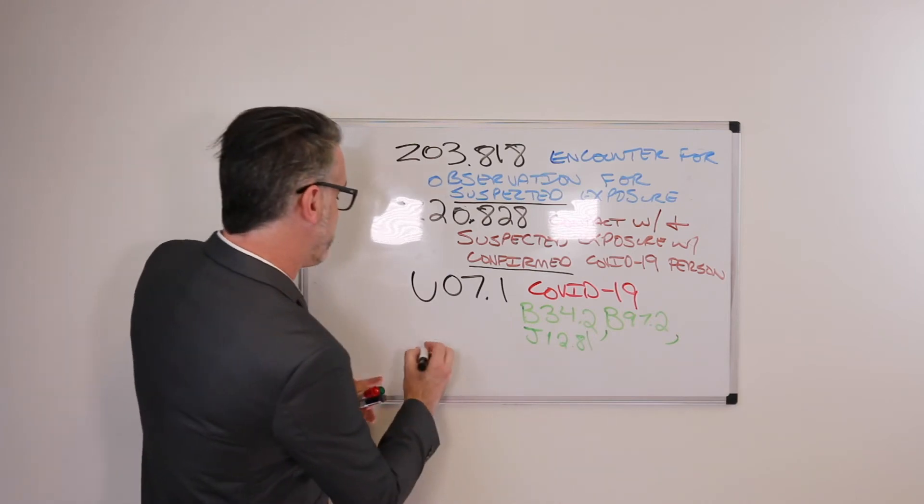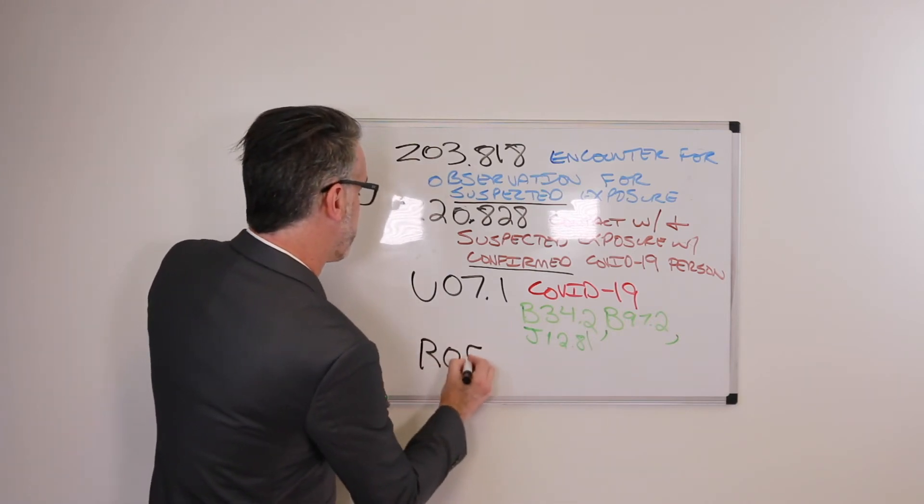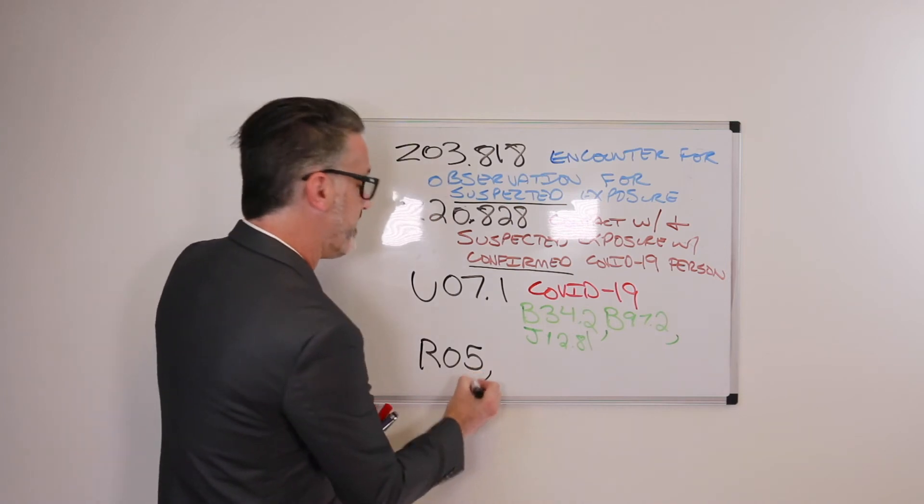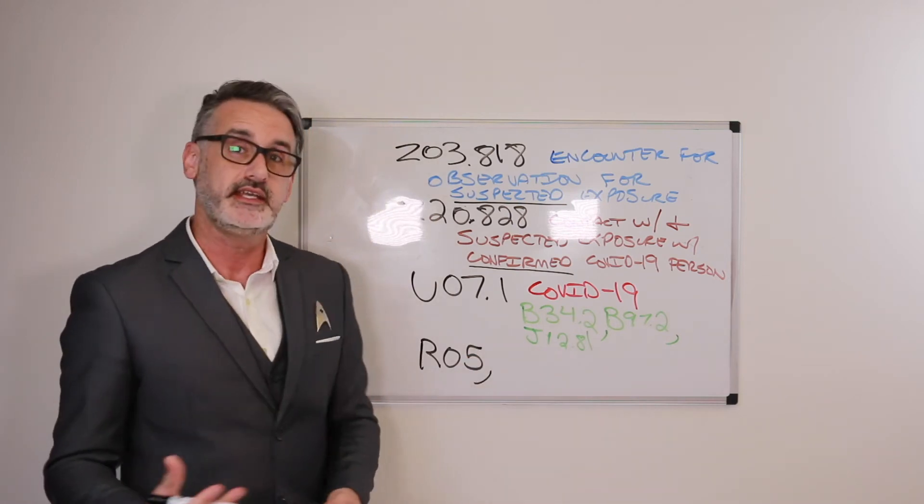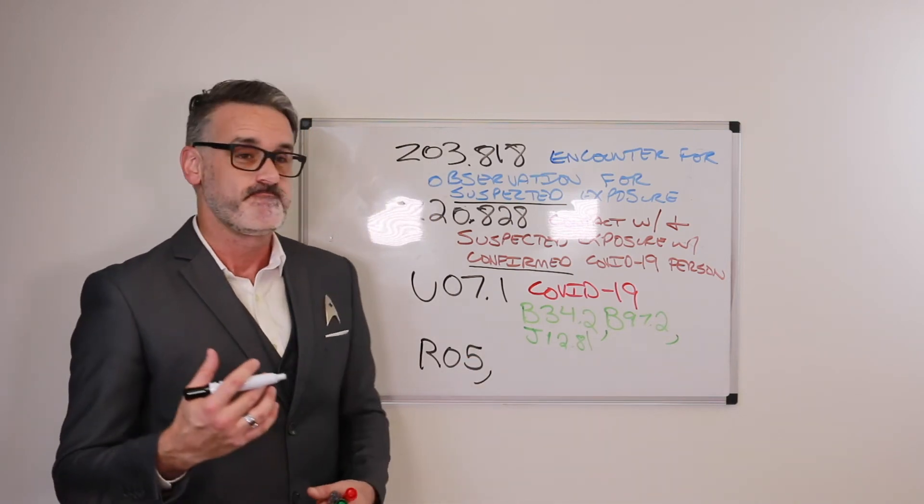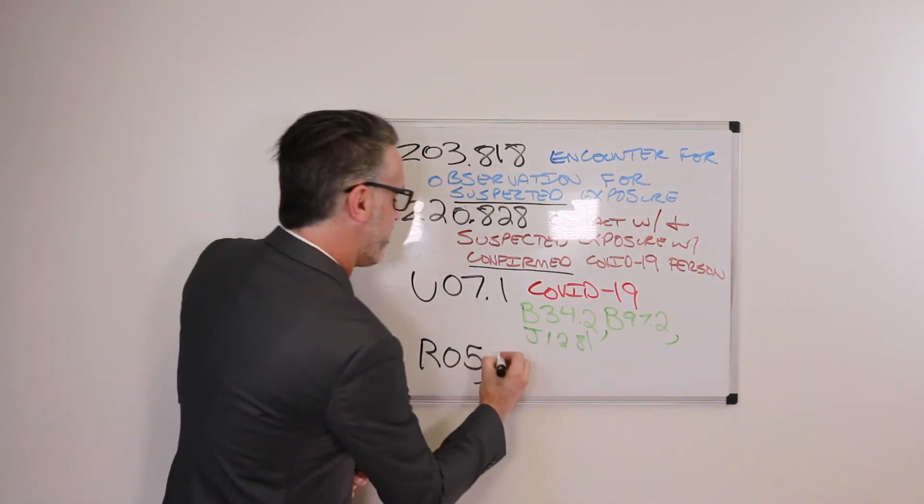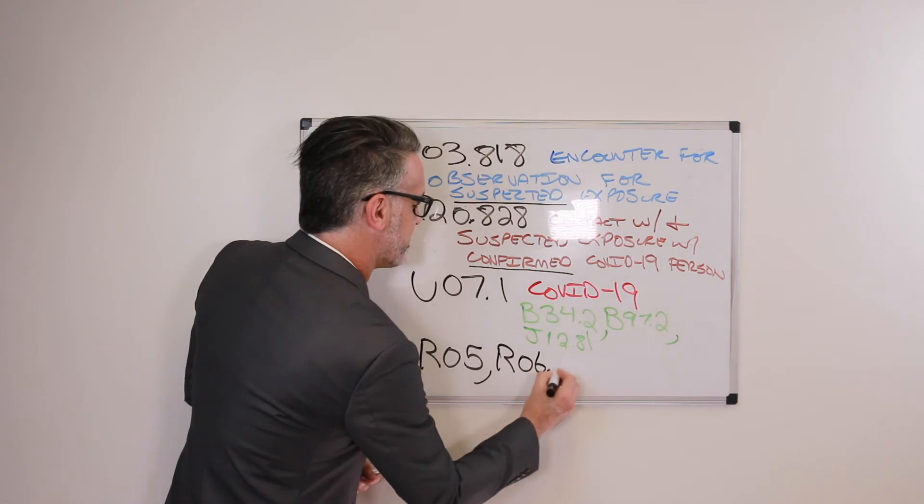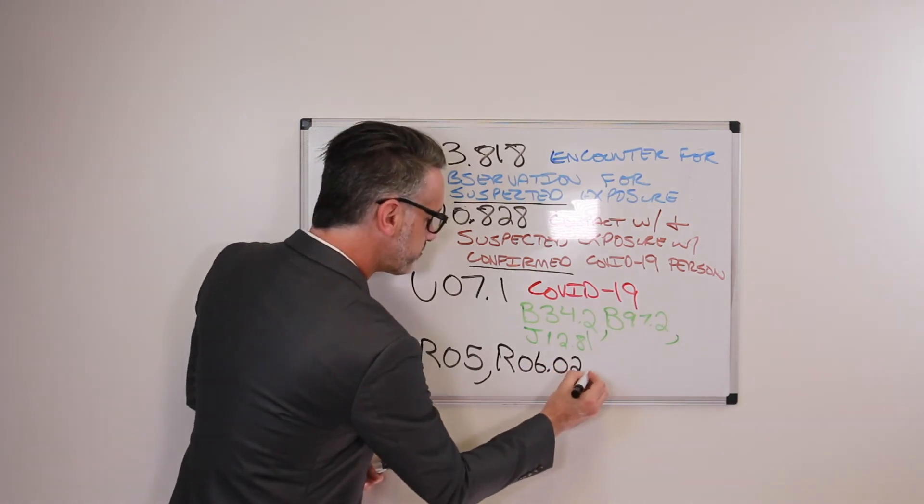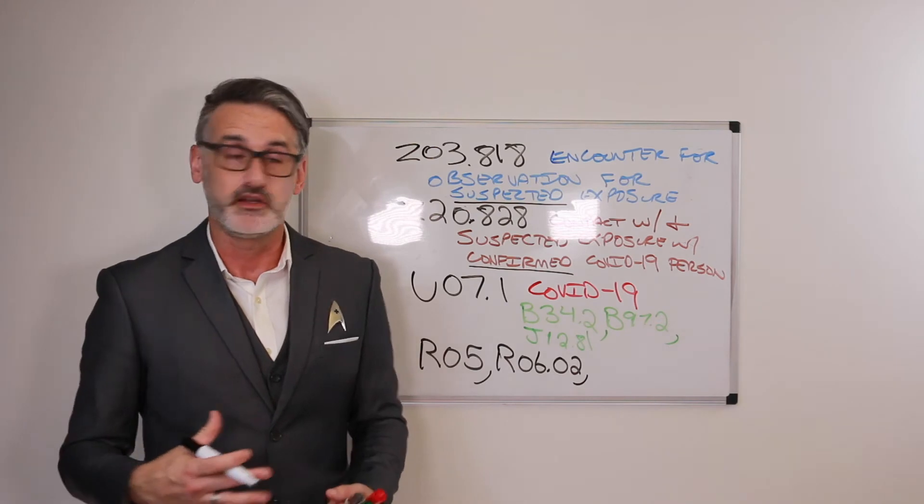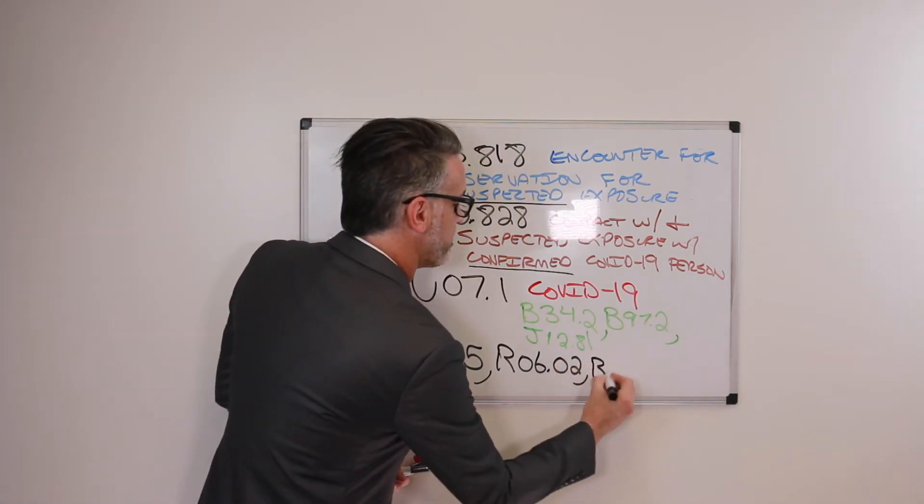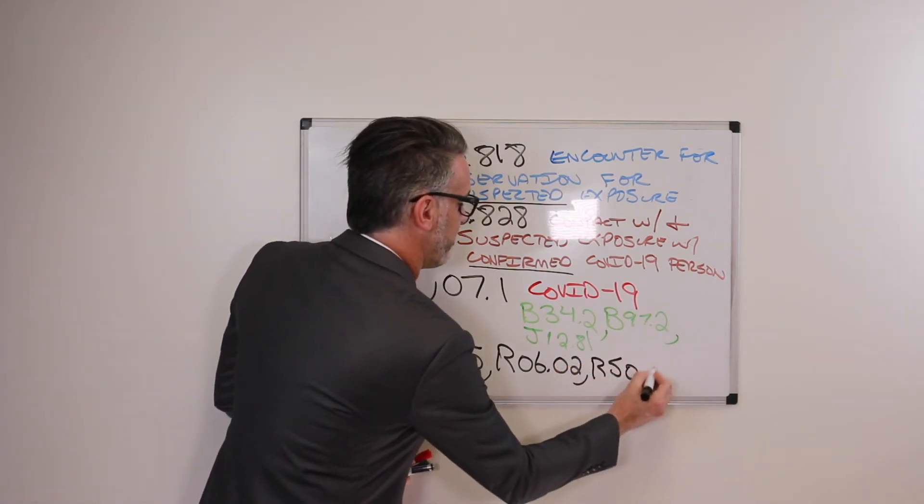So for example, if a patient has a cough, then we would code that as R05. If the patient is negative for COVID-19, but for example has SOB as in shortness of breath, then we would code that as R06.02. And or if the patient has a fever, then we would code that as R50.9.